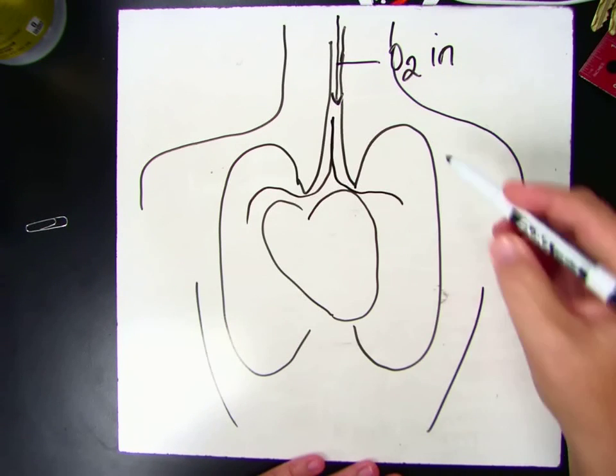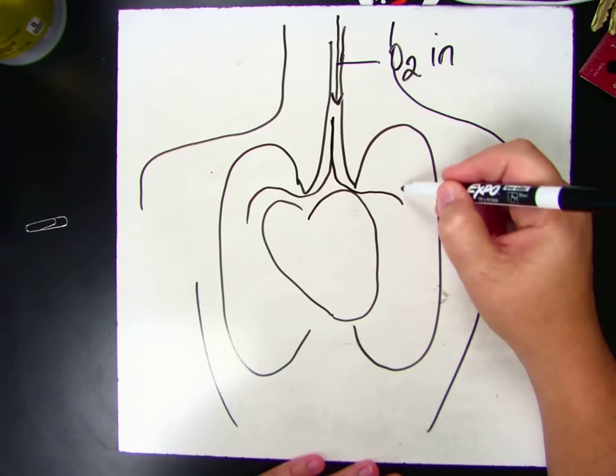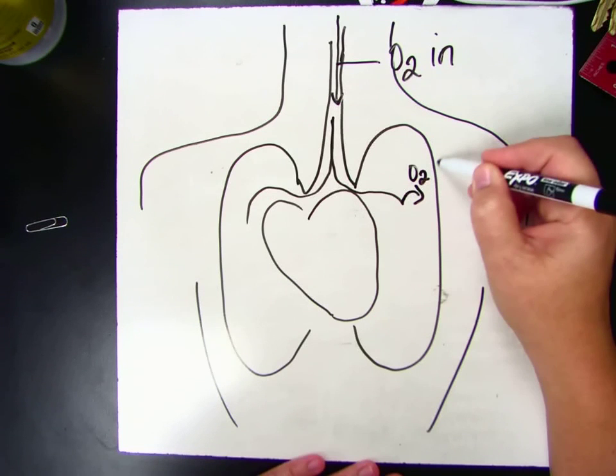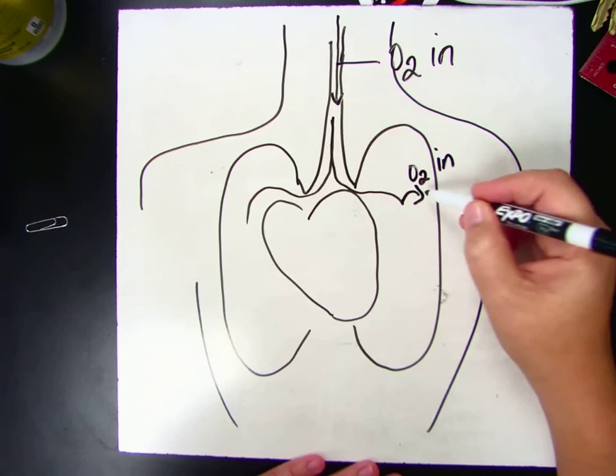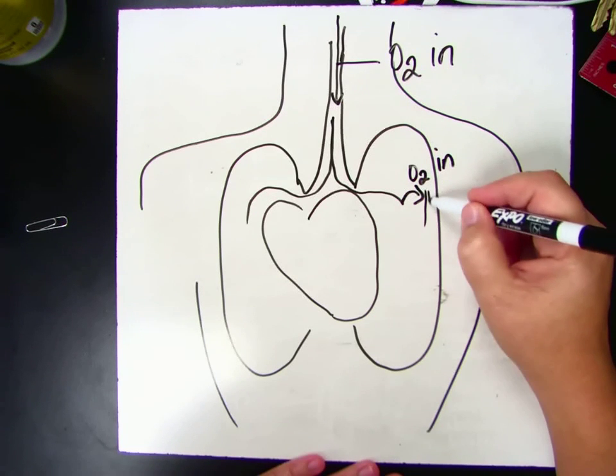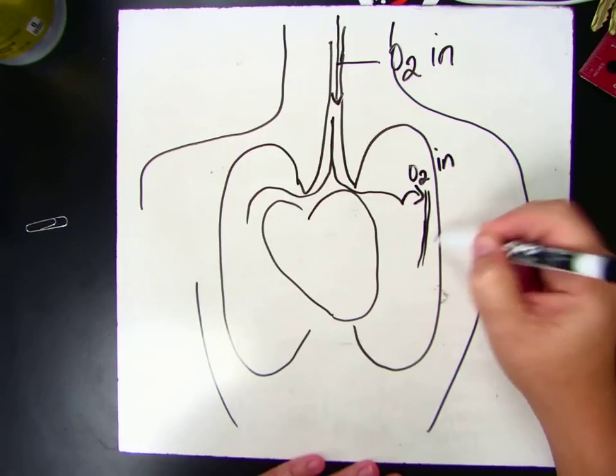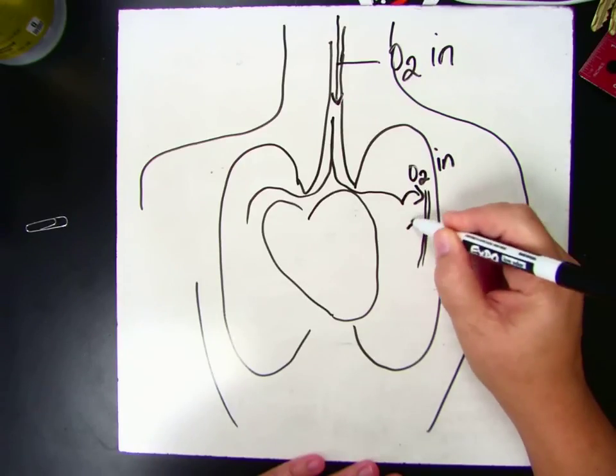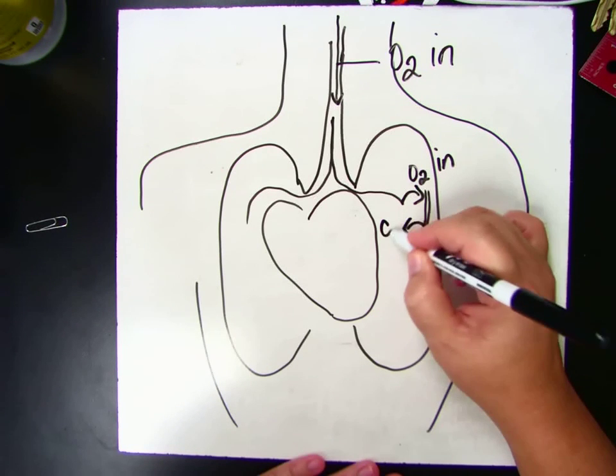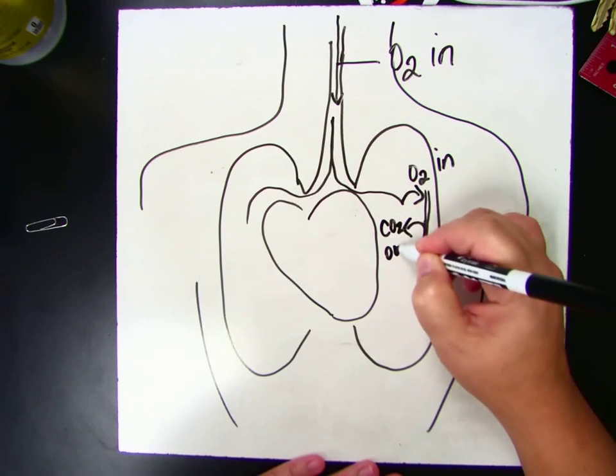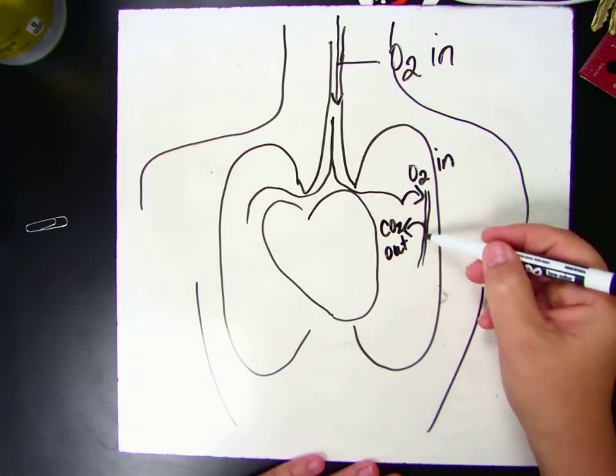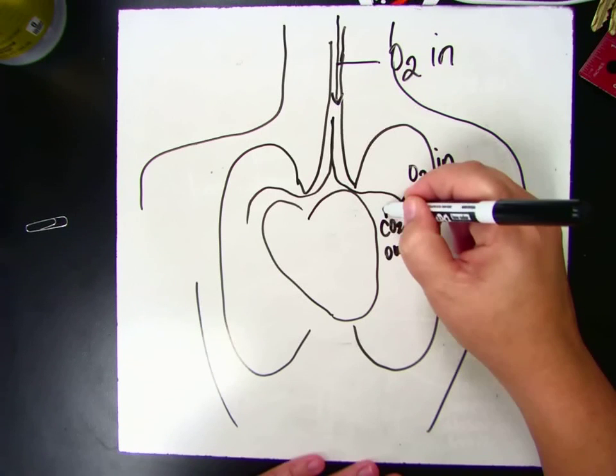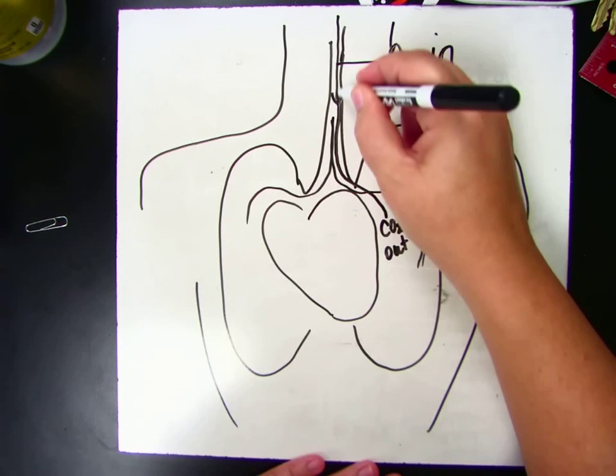And what happens in the lungs is that the oxygen goes into the blood that's running through the lungs. There's all kinds of blood running through the lungs. And then the blood that's in the lungs actually sends carbon dioxide out. So the carbon dioxide comes out of the blood and into the lungs, and then what we do is we exhale or we breathe out.